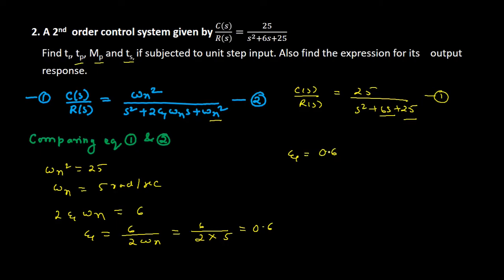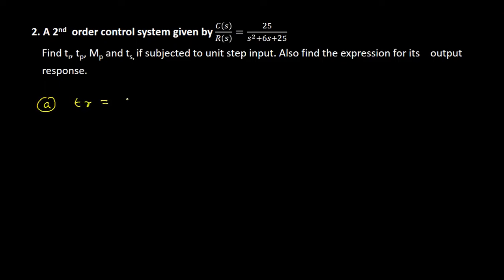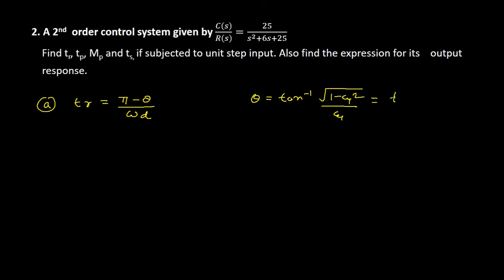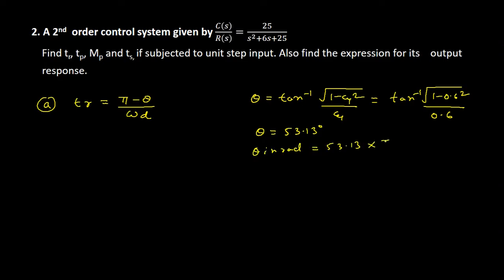First we will find the rise time. Rise time tr equals pi minus theta divided by the damped frequency of oscillations omega_d, where theta is in radians. We know that theta equals tan inverse of (sqrt(1 minus zeta squared) divided by zeta). Substituting zeta equals 0.6, we get theta equals tan inverse of (sqrt(1 minus 0.36) divided by 0.6), which gives theta equal to 53.13 degrees. Converting to radians by multiplying by pi/180, theta in radians equals 0.9272.